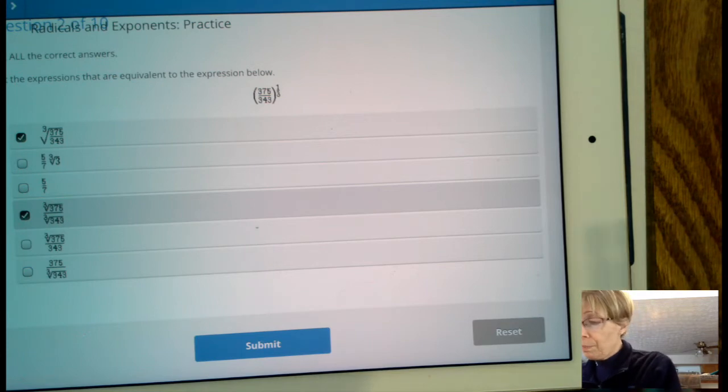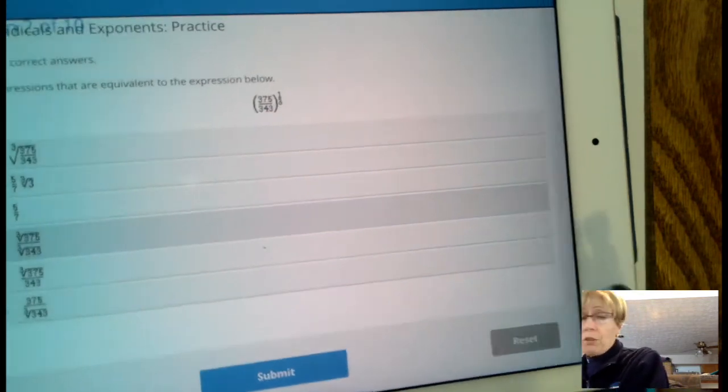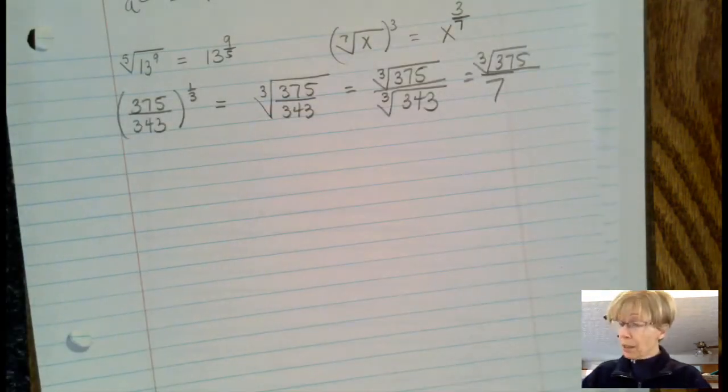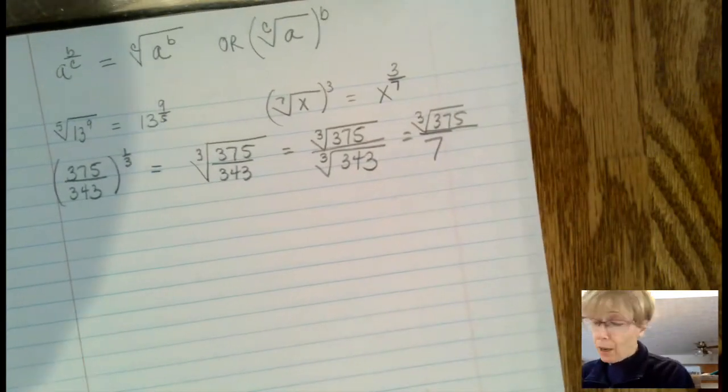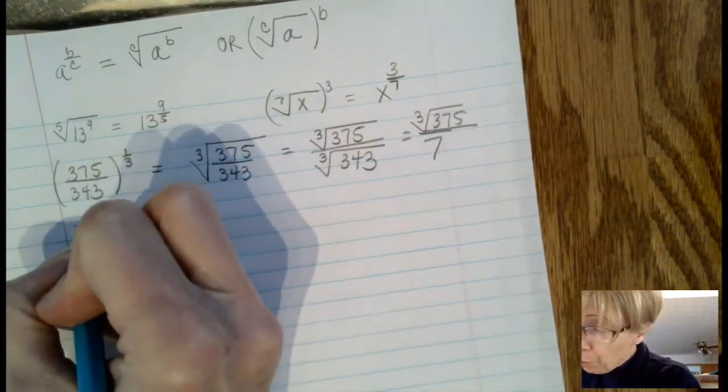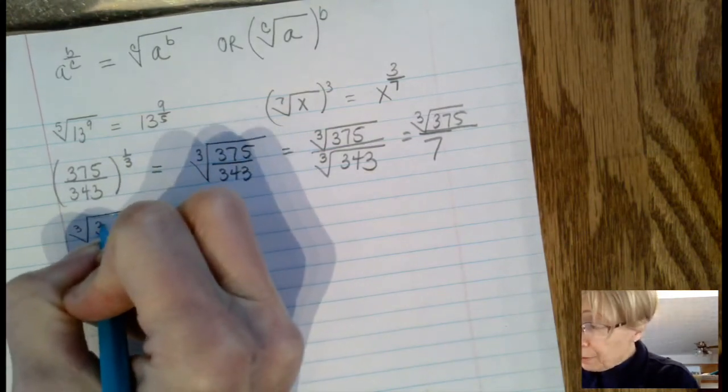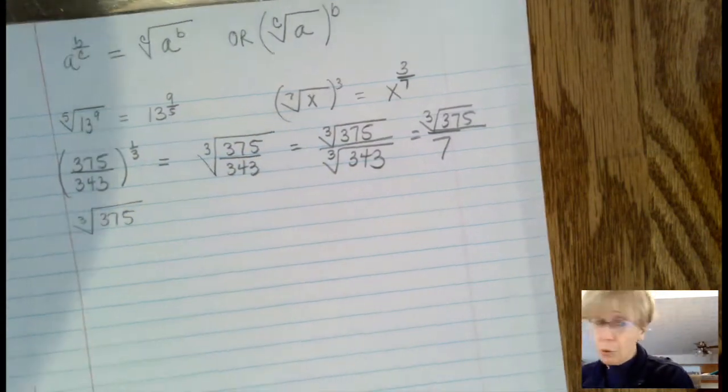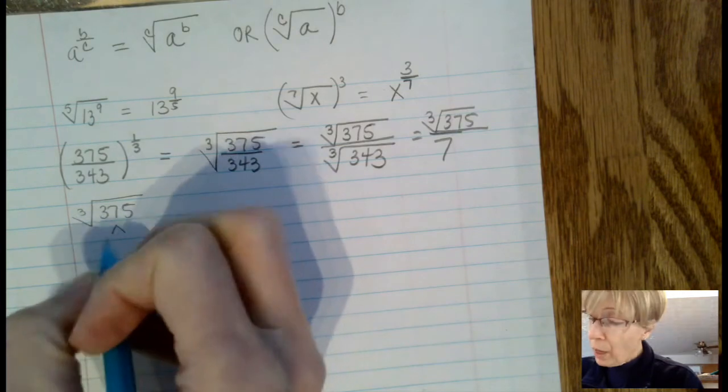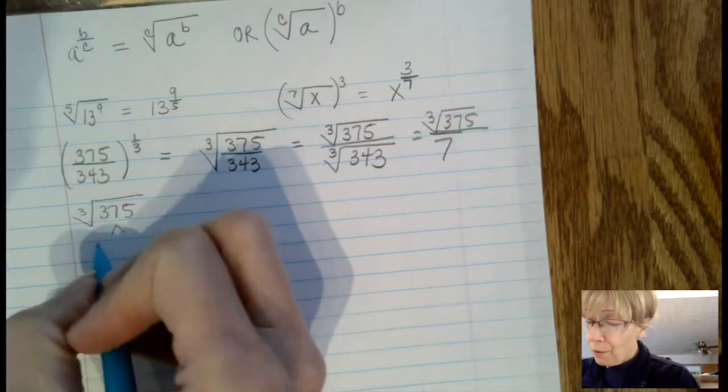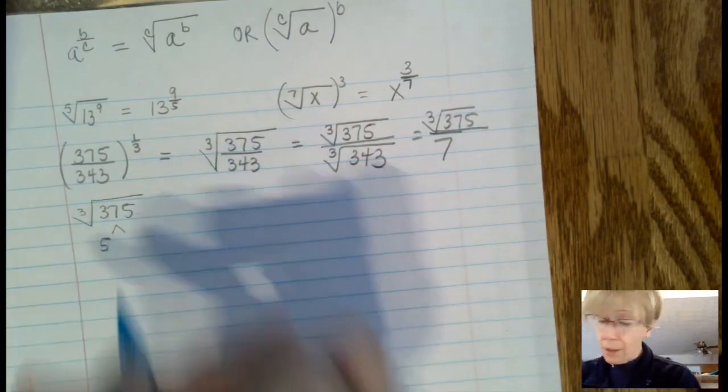You could have used 25 times 3. 15 is 5 times 3. If we write that again, we're going to end up with the cube root of 5 times 5 times 5 times 3. Because there's a 3 in this checkmark part of the radical, we're looking for three of one.